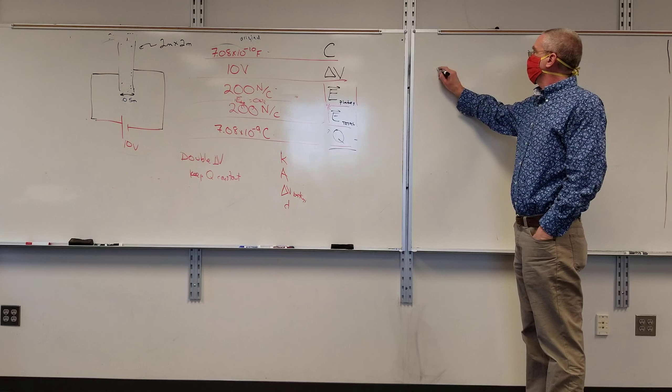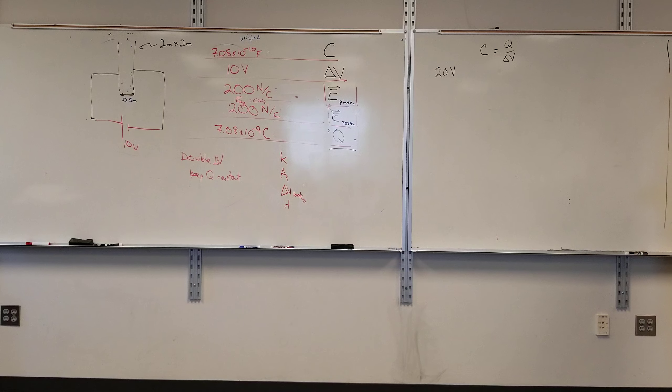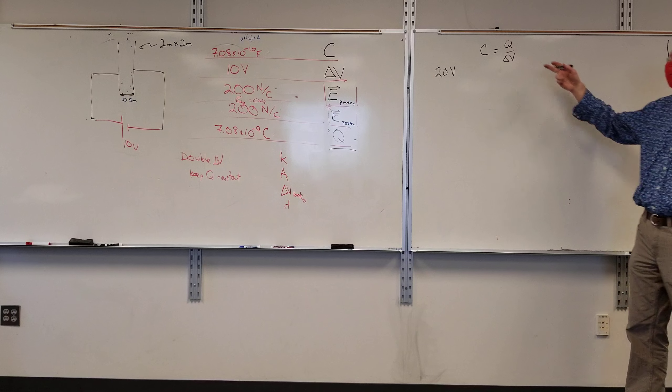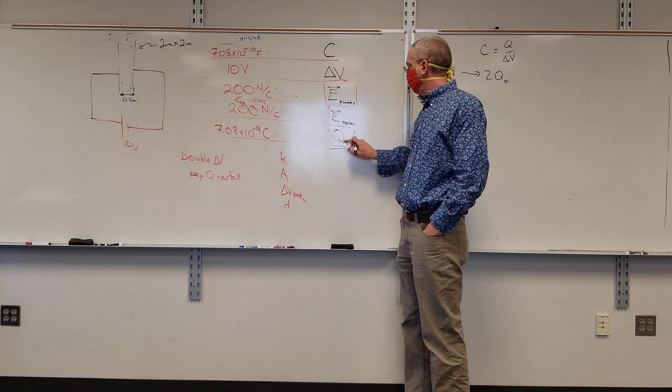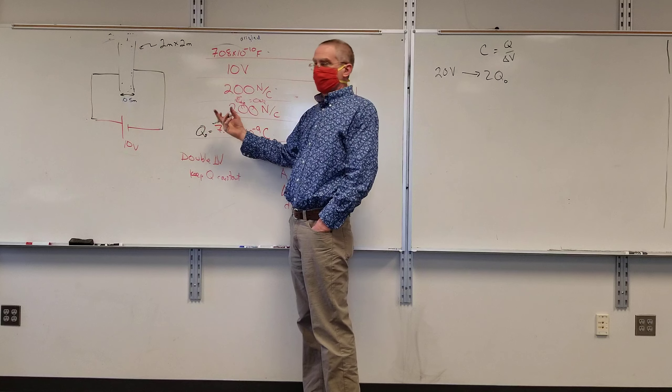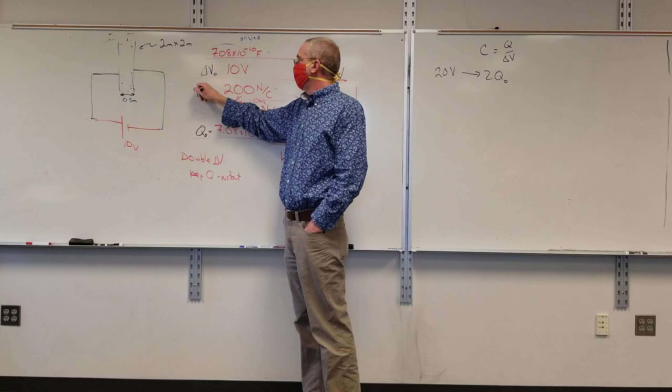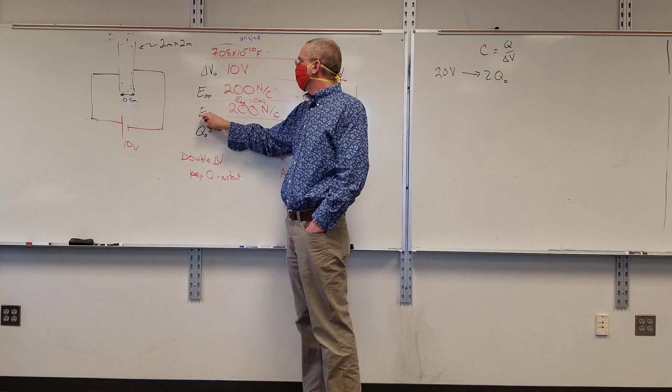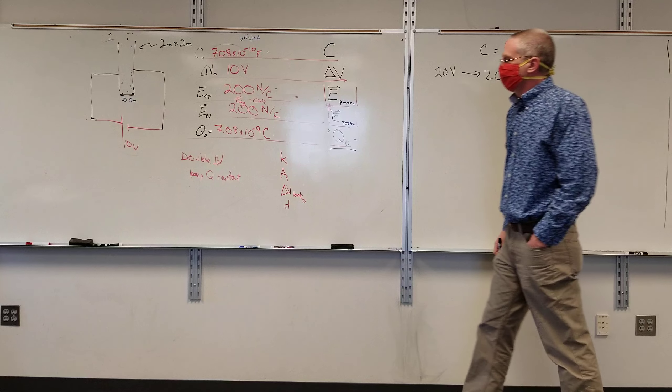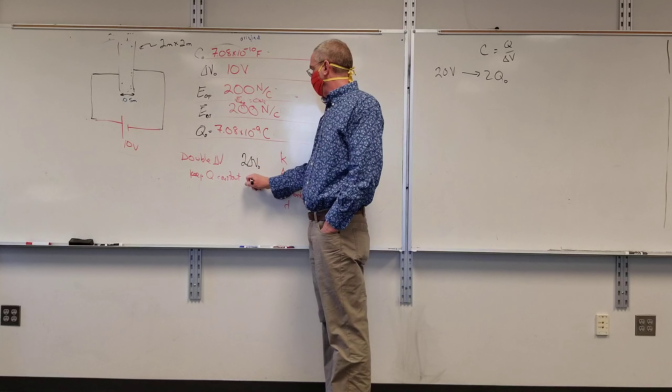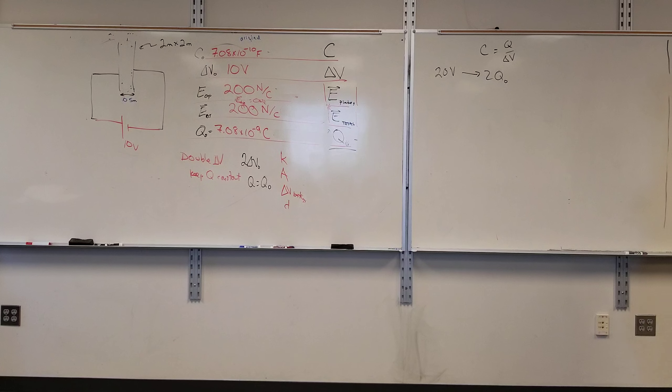So if this becomes 20 volts, and I know capacitance is Q over delta V, if I do nothing else, then my capacitance would still stay the same, but I would double the charge. So this would automatically be 2Q sub zero. Q sub zero is the initial charge, V sub zero the initial voltage, E sub zero the initial electric field, and C sub zero the initial capacitance. So I want two times the initial voltage, and Q equals Q sub zero.